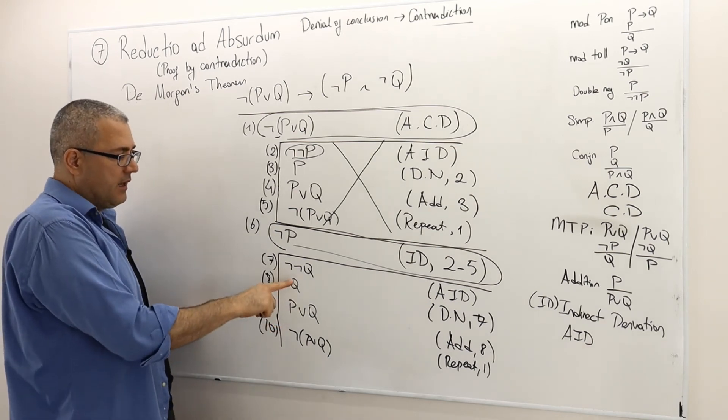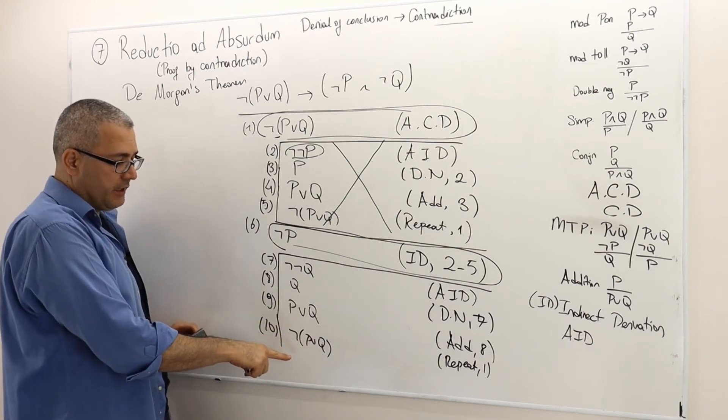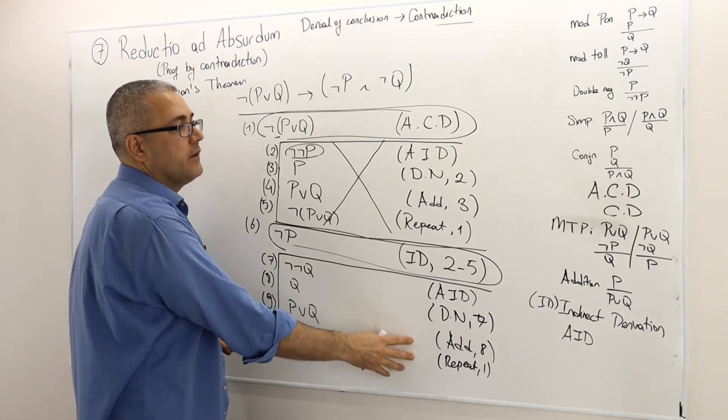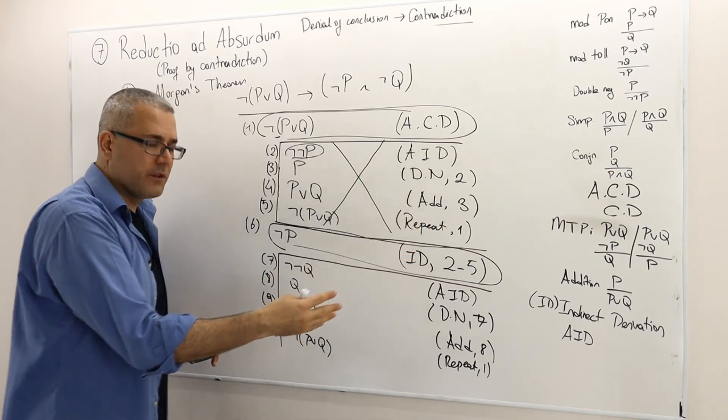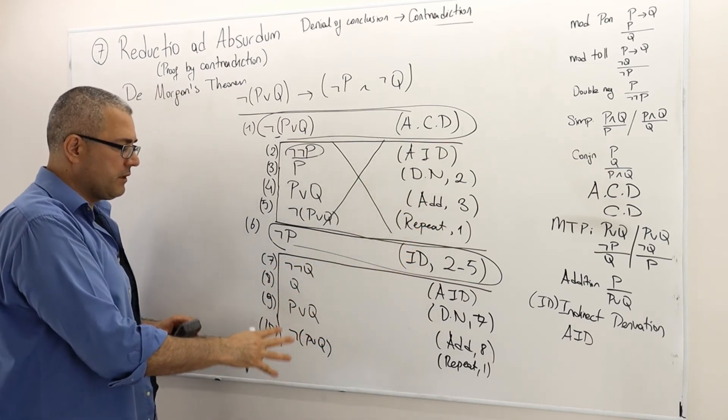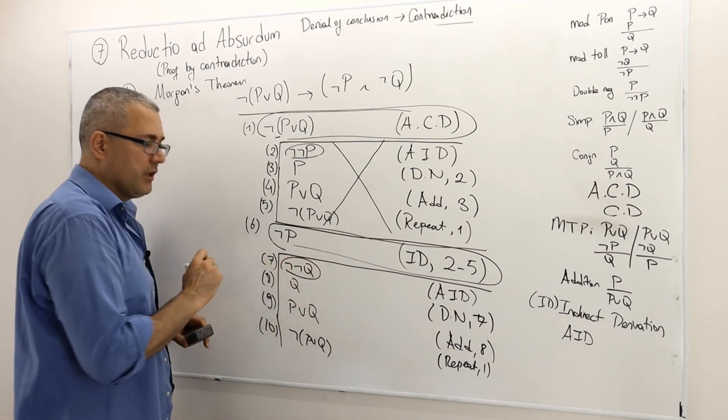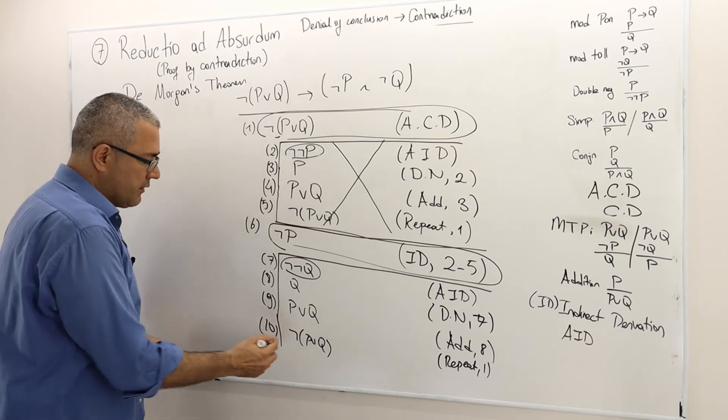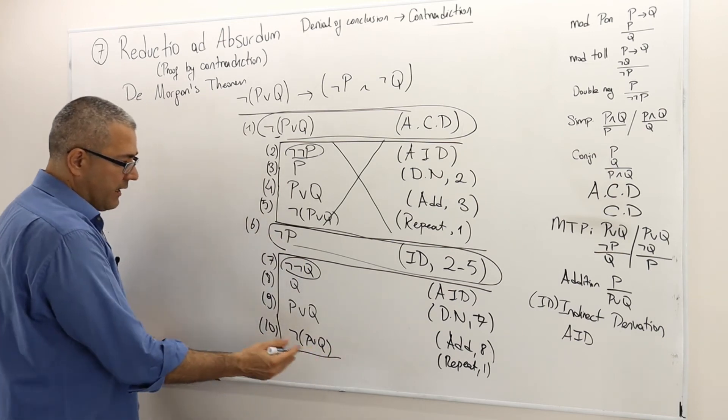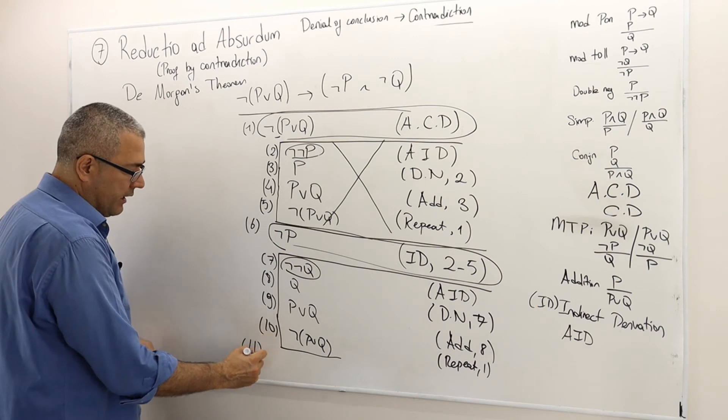So once again, I reached a contradiction here. And so once again, because I didn't do any mistake in applying my inference rules, this contradiction must be because of my initial sub-assumption - that this not not Q is a true statement. So it must be false. And hence, I close it.